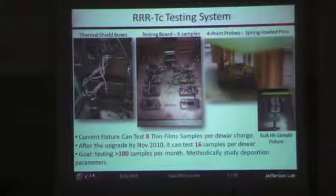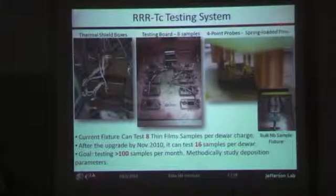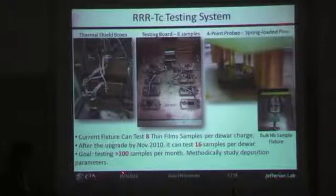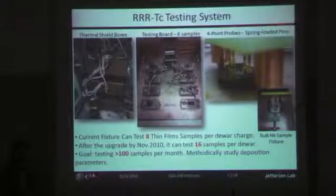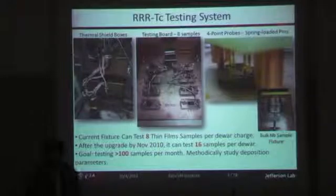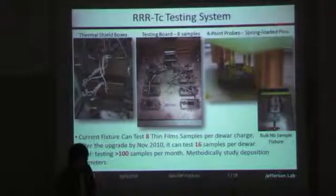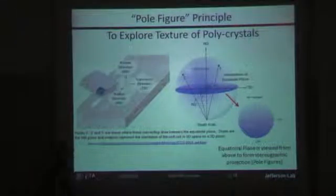Currently we can test eight samples, and we're scaling this up to be able to test as many as 16 in a single Dewar insertion. A typical cycle is about a day — getting the Dewar in, cooled down, and heated back up takes about a day. The goal is to characterize many small samples in one month so we can run through many conditions on multiple systems. Right now, four systems are feeding into this for characterization, and we're definitely hitting a bottleneck and needed to increase the number of samples per run.